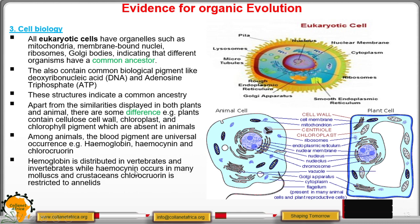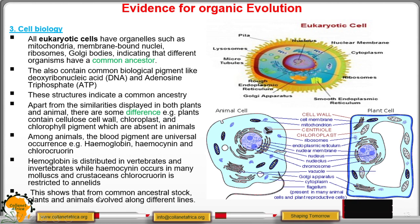Hemoglobin is distributed in vertebrates — animals that have a notochord or a backbone — while invertebrates do not have a backbone. These pigments are common in animals, showing that from a common ancestral stock, plants and animals evolved along different lines, because they share some organelles but also have organelles not common to both plant and animal cells.